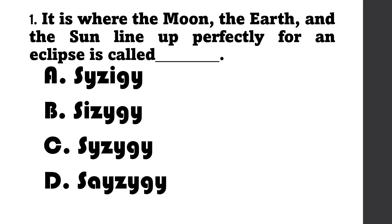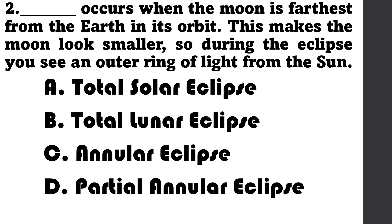Number 1: It is where the moon, the earth, and the sun line up perfectly for an eclipse — this is called blank. The answer choices are A. Syzygy, B. Syzygy, C. Syzygy, D. Syzygy.